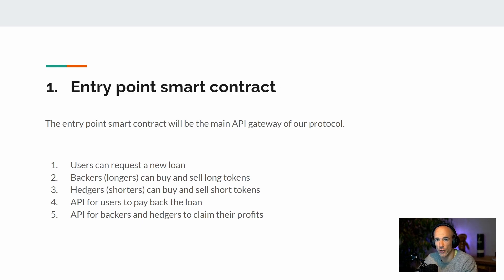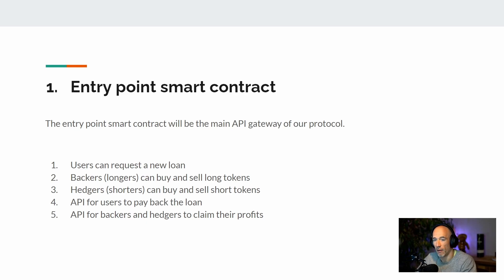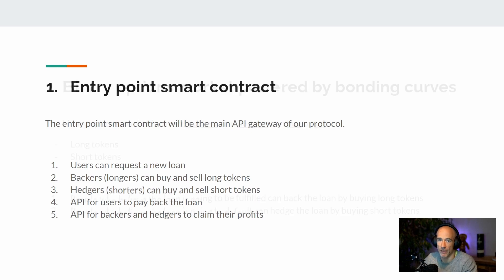However, users will only interact with our API gateway — our main entry point smart contract. For example, they can request a new loan, buy and sell their loan tokens, pay back the loan, and of course there is an API for the backers and hedgers to claim their profits.